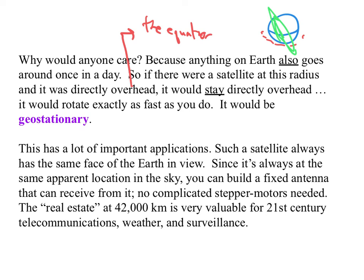Geostationary orbits have a lot of important applications. For instance, the satellite always has the same face of the earth in view, which is really useful when you're doing things like weather monitoring. Because you don't have to correct for the rotation of the earth, you can just stare down. If you've ever seen these satellite pictures, they're basically stationary pictures of the earth, which is nice. Since it's always the same apparent location in the sky, you can build a fixed antenna that can receive from it. So if anyone has a direct TV or dish network satellite dish, you know that they're just dishes that you mount. They don't have motors, they don't track the satellites or anything like that. They just point to the south.